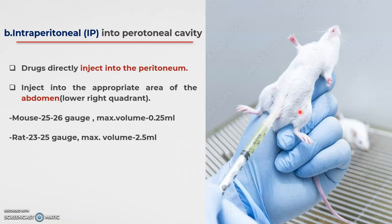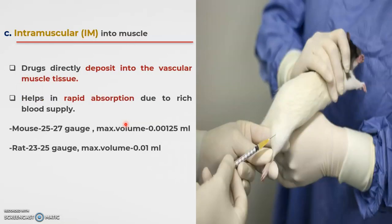The intraperitoneal route involves directly injecting into the peritoneal cavity — see this image showing injection into the abdomen or lower right quadrant area. The needle gauge size is chosen according to the animal, and there is a specified maximum volume. For the intramuscular route, the drug is directly deposited into the muscle tissues, which helps with rapid absorption compared to other routes like oral. The specific area of the animal's leg is used for this injection.